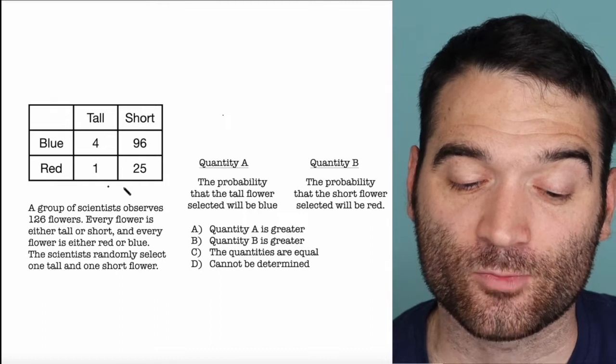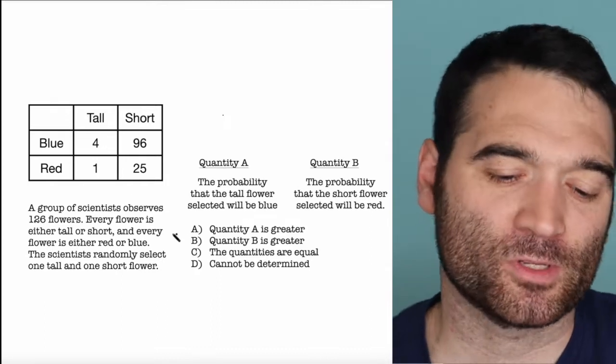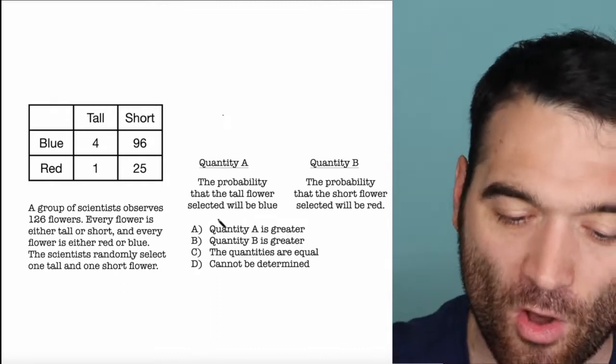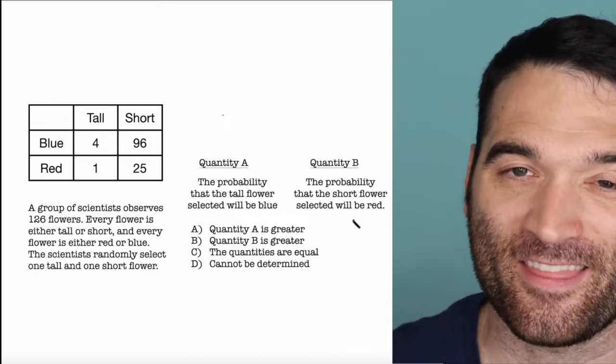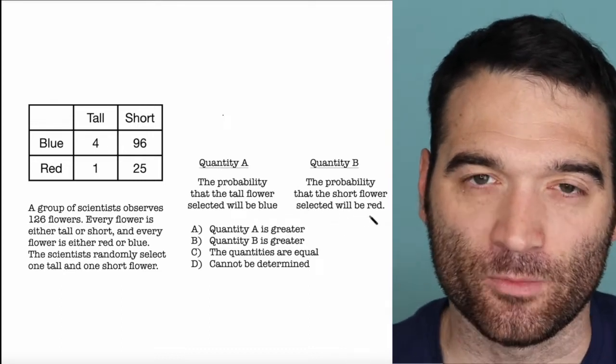So here's my table here. It's represented right there. I want to know what's greater, the probability that the tall flower selected will be blue or the probability that the short flower selected will be red.